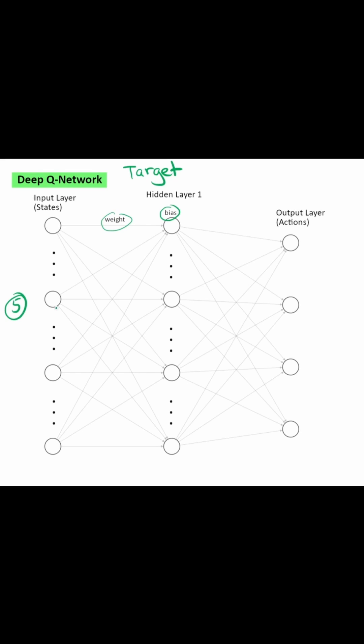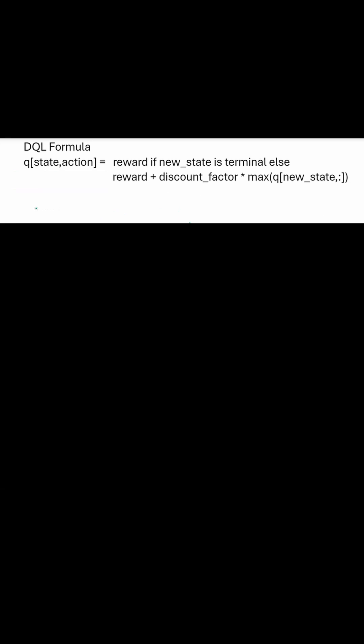Step 5, we take the exact same input, send it into the target network. Step 6, we calculate the Q value for state 14. We're taking the action of 2. Since we're going into state 15, it is a terminal state. We set it equal to 1.